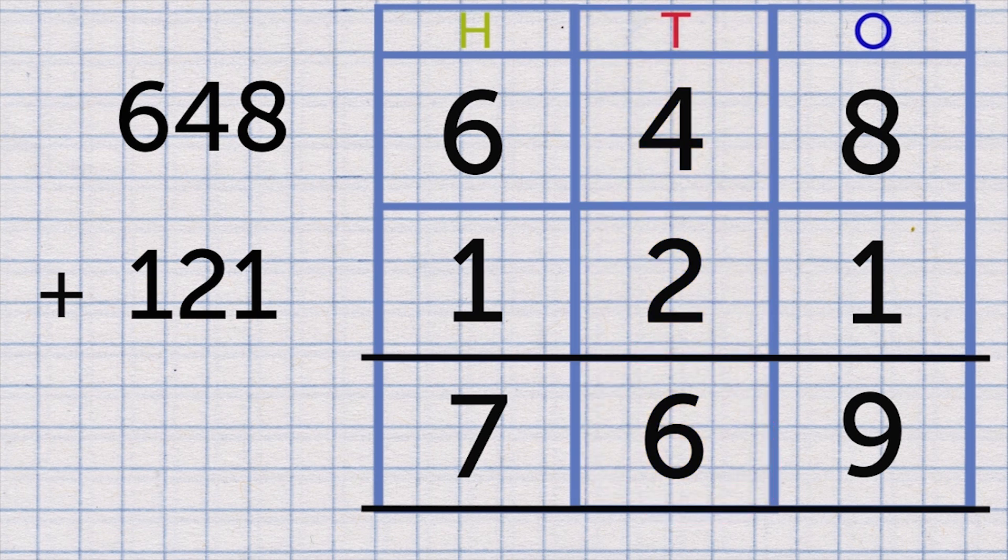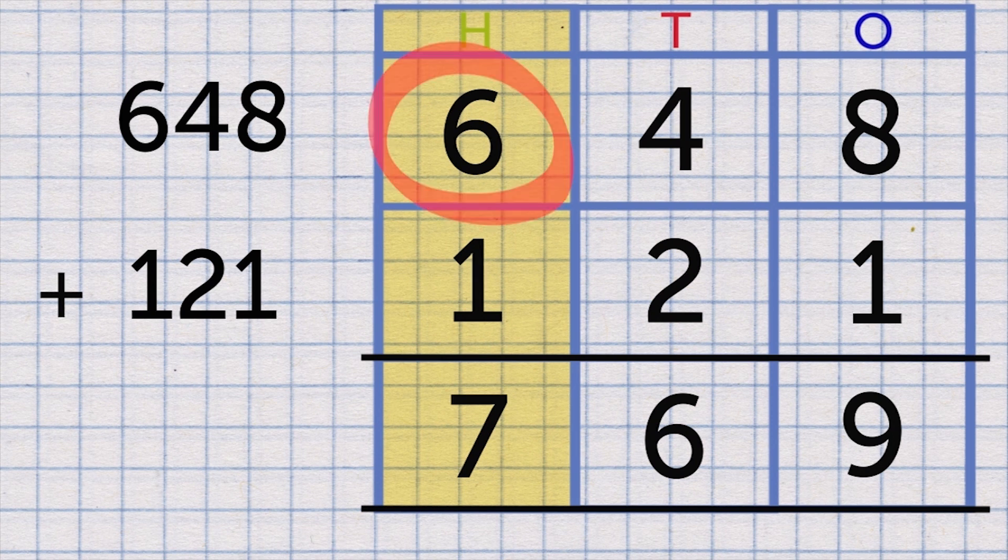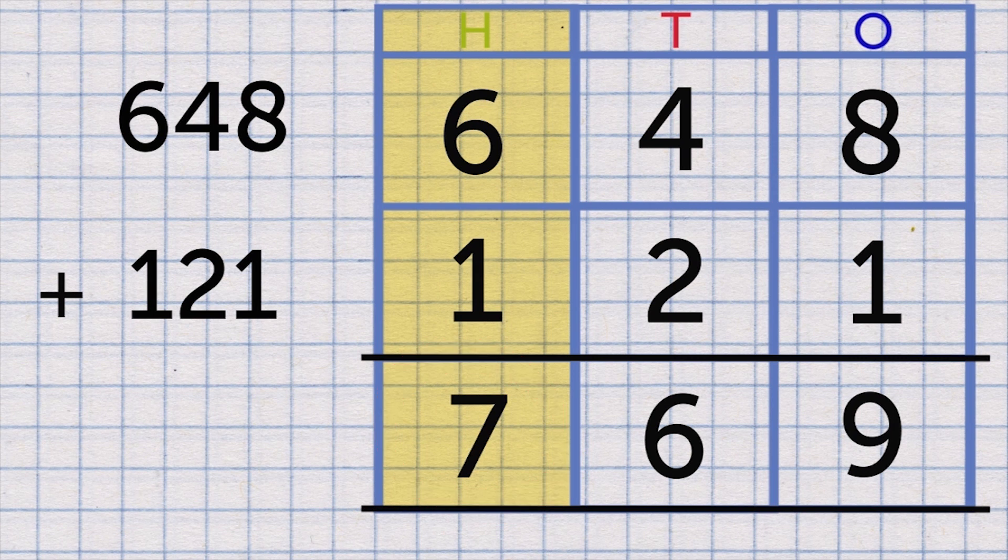Then the hundreds: 600 and 100 is 700. That's 7 in the hundreds column. 769.